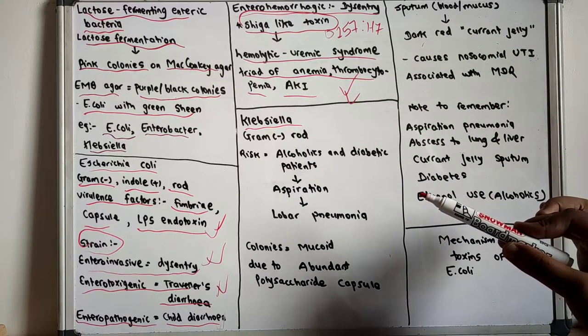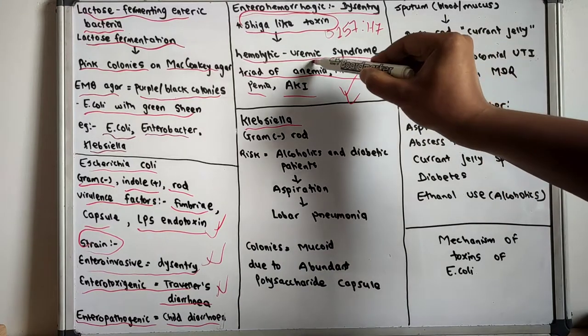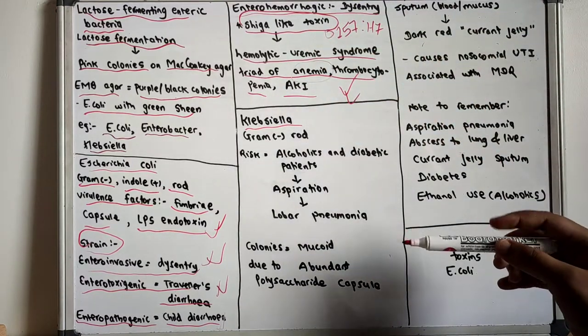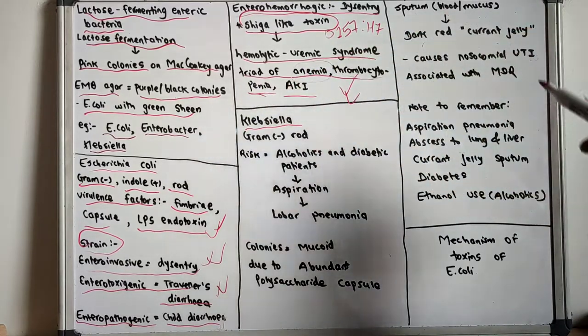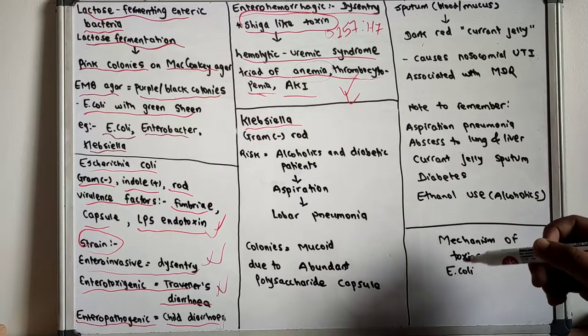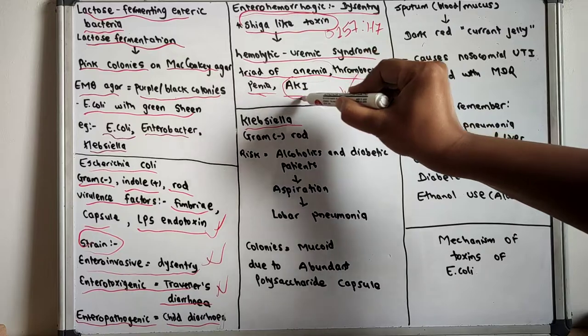There is platelet consumption and decreased renal blood flow. If there is mechanical hemolysis, there is anemia. If there is more platelet consumption, there is thrombocytopenia. And if there is decreased renal blood flow, then there is acute kidney injury.